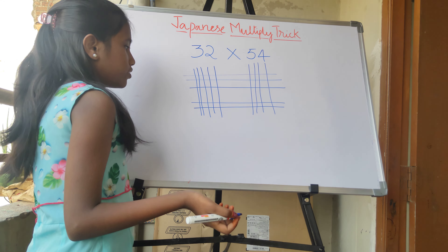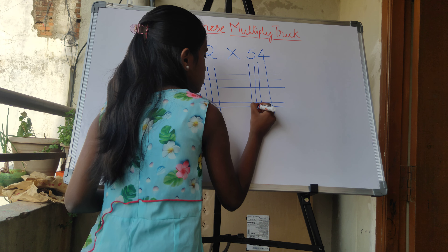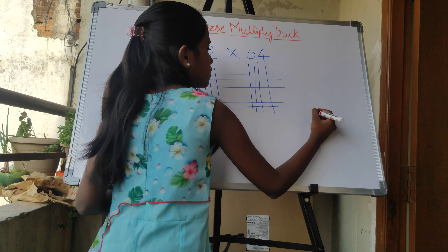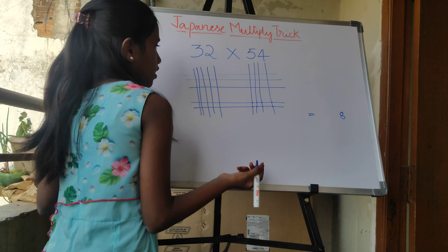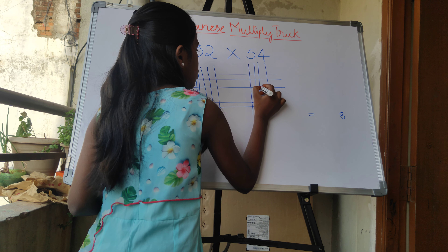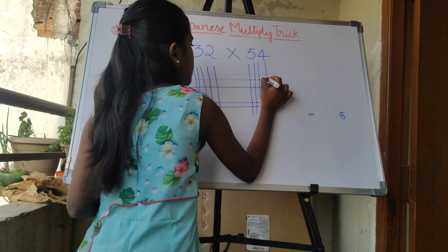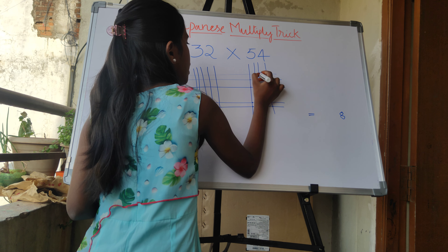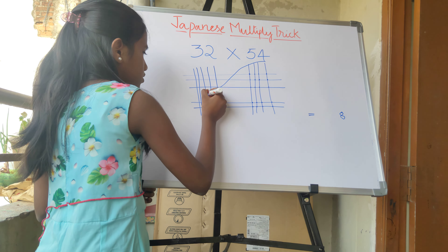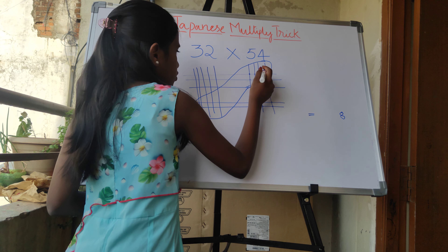Now we have to count the intersecting lines. So first we will start here: 1, 2, 3, 4, 5, 6, 7, 8. So here, 12.